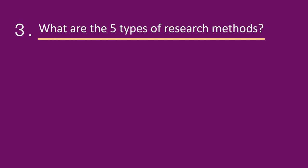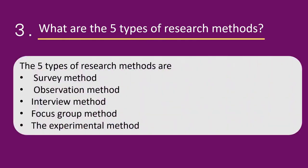What are the 5 types of research methods? The 5 types of research methods are Survey Method, Observation Method, Interview Method, Focus Group Method, and Experimental Method.